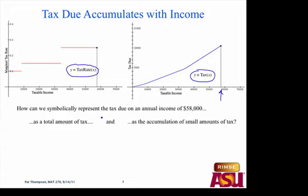How could we represent the tax due on $58,000 as a total amount? Eric wants to plug $58,000 into the tax function. Will that give you the tax due? That's what the tax function is — you plug in a taxable income, it outputs your tax due. That function evaluated at $58,000 represents the tax due right there.